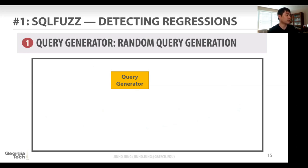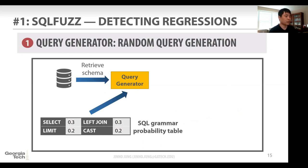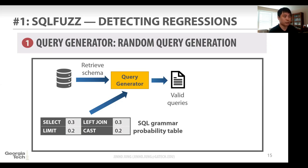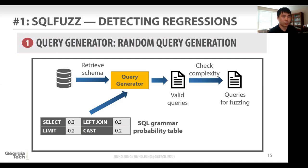So I will show how we generate the query. First, we retrieve the schema from the database. We also read the initial SQL grammar probability table, and based on these probabilities we generate random queries. After generating a valid set of queries, we check the complexity of the query. If the query uses too many joins or too many subqueries, we discard it, because if the query is too complicated, developers complain about its realism. If the query is not realistic, they think it's too artificial and that it cannot be a performance regression. That's another heuristic we learned from the developers.